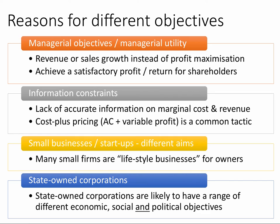A key part of A-level business economics is to think about the possible divorce between ownership and control. The managers in a business — purchasing managers, personnel managers, middle managers — may actually have a different objective from the shareholders. Perhaps the managers want to maximise their monthly paycheck, or collect a bonus at the end of the year based on sales, in which case revenue or sales growth might be a bigger priority than simple profit maximisation.